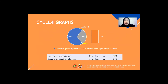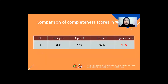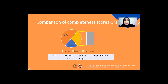This is the cycle two graph: students who got completeness were 25 students or 69%; students who did not get completeness were 12 students or 31%. For the comparison of completeness scores: pre-cycle was 28%, cycle one was 47%, cycle two was 69%, and the overall improvement was 41%.